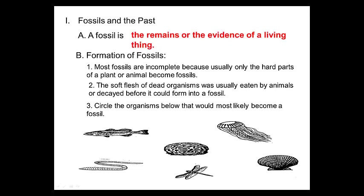Right now you want to circle the organisms below that would most likely become a fossil. So we have a fish, we have a worm, looks like a sponge, a fly, jellyfish, and a seashell. Hit pause and circle the ones that you think would become a fossil.